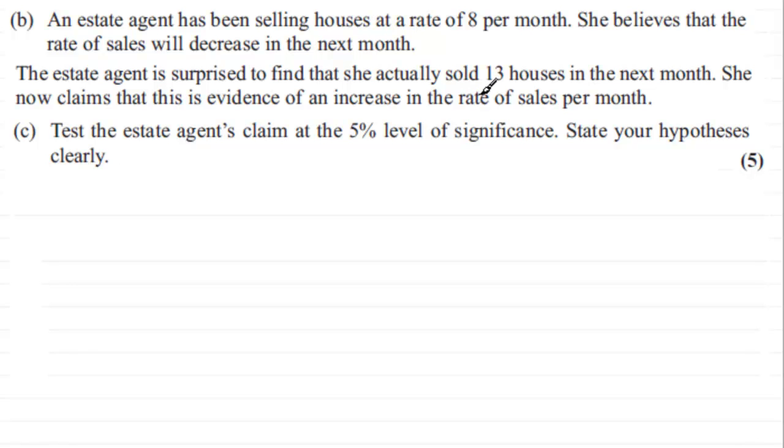Let's go for the basic probability model. We need to define the random variable first. Let X be the random variable, the number of houses sold per month, where X is distributed as a Poisson distribution. I don't know what the mean rate is. I know it says 8, but I'm not going to write 8 here. I'm just going to call it lambda, because the null hypothesis H0 is going to work on the assumption that lambda, the mean, equals 8.